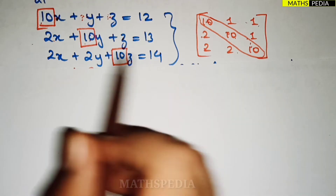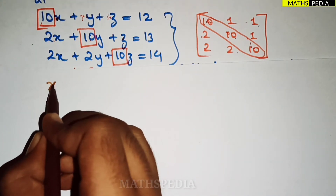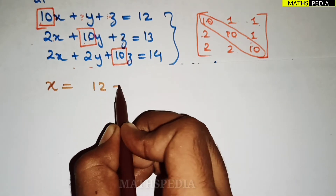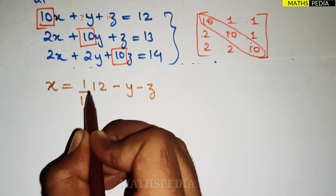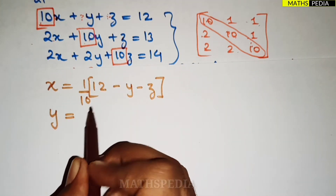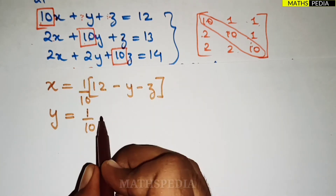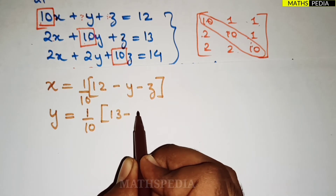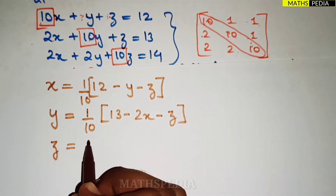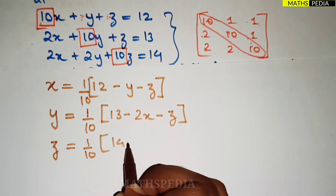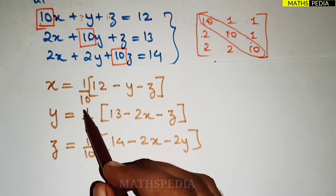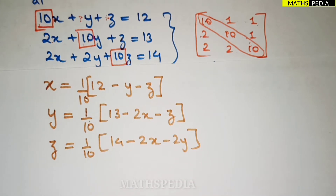Now, in the first equation take x on one side: x = (1/10)(12 − y − z). In the second equation, isolate y: y = (1/10)(13 − 2x − z). For the third equation, isolate z: z = (1/10)(14 − 2x − 2y). It is not necessary that all constant terms be the same number — these are the iterative formulas we'll use.